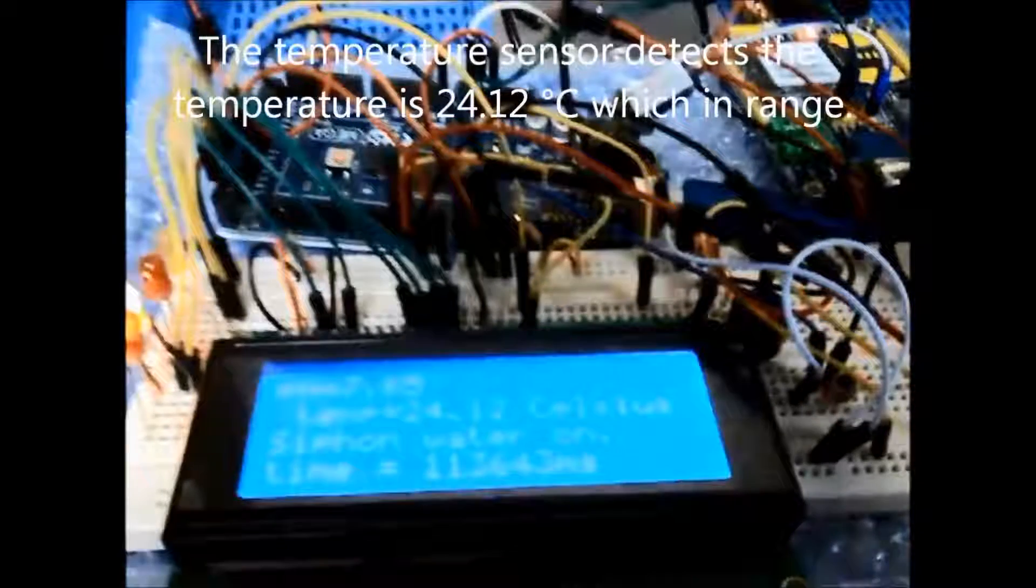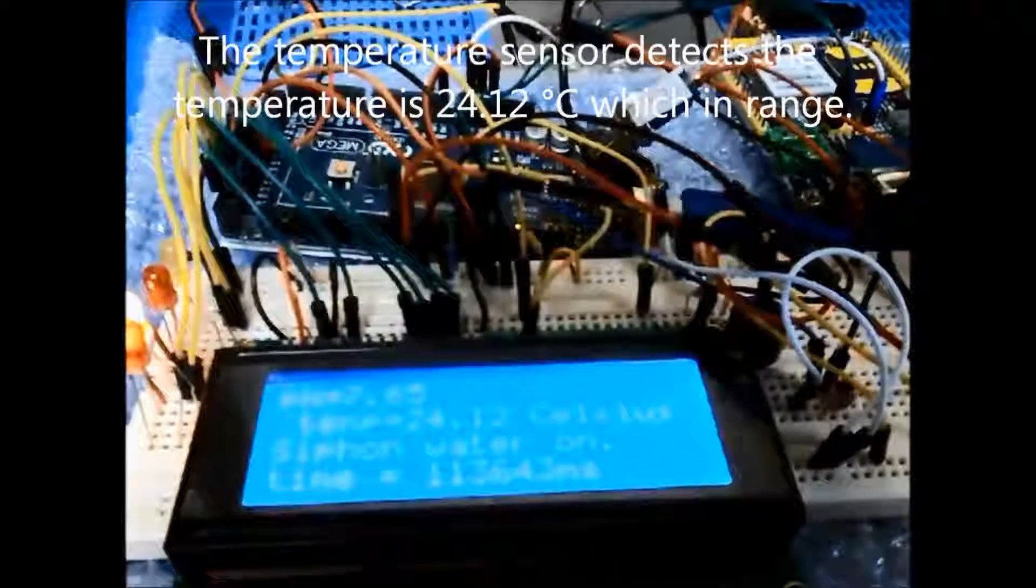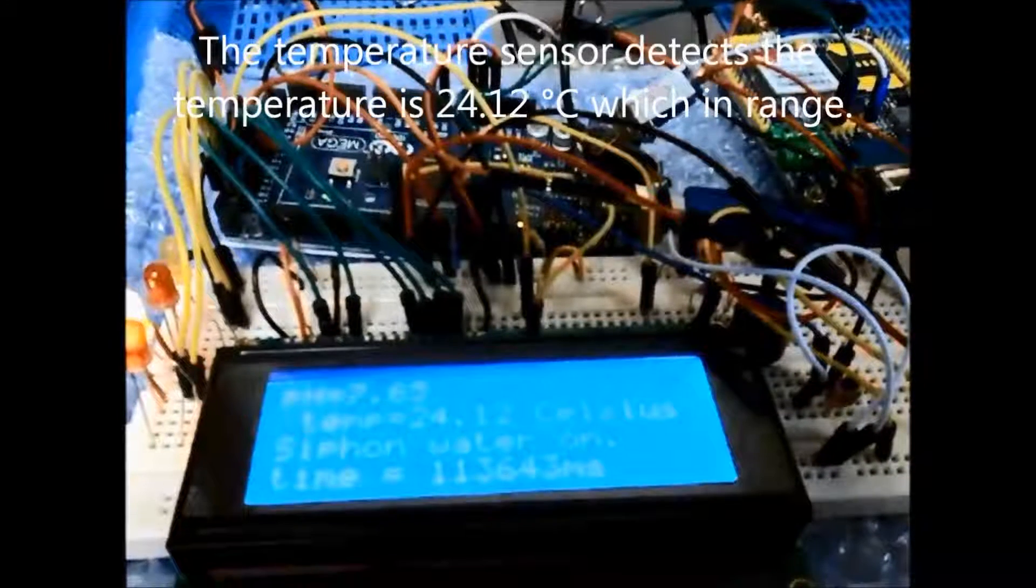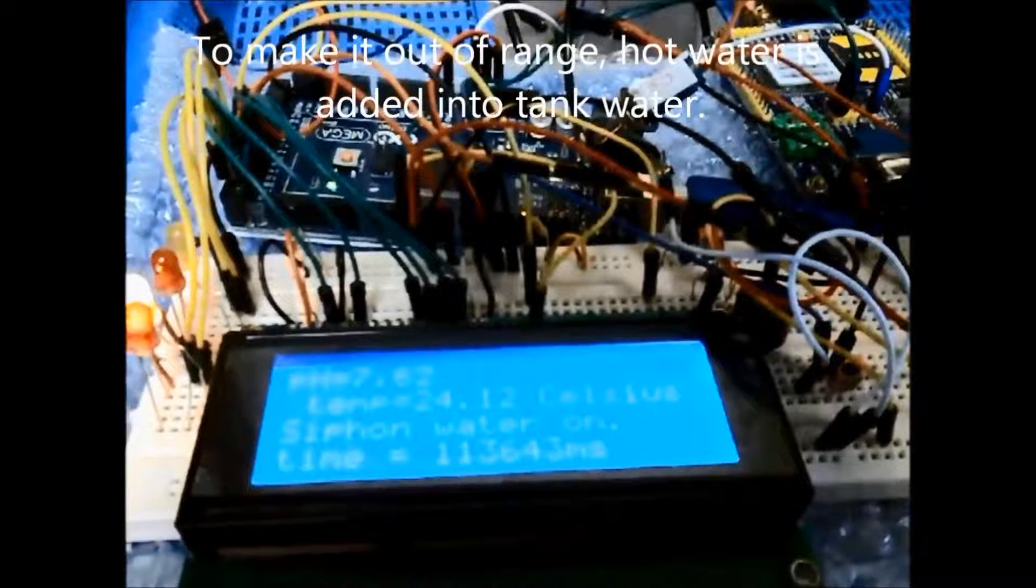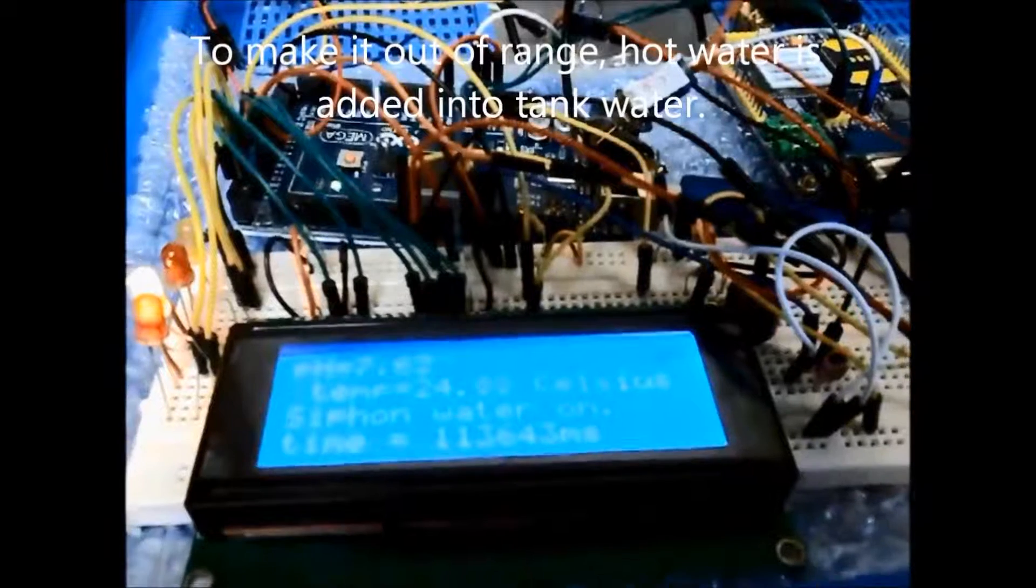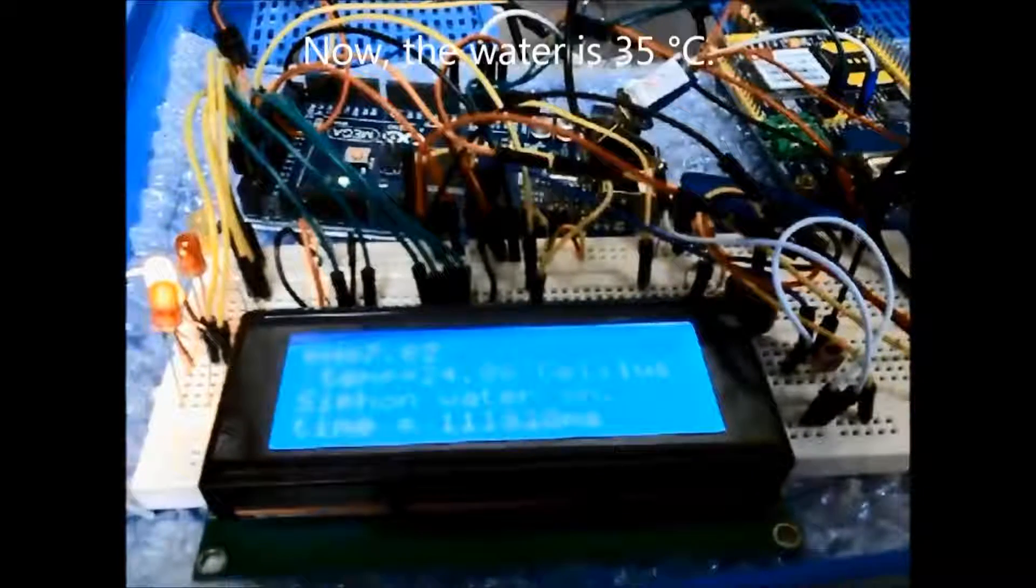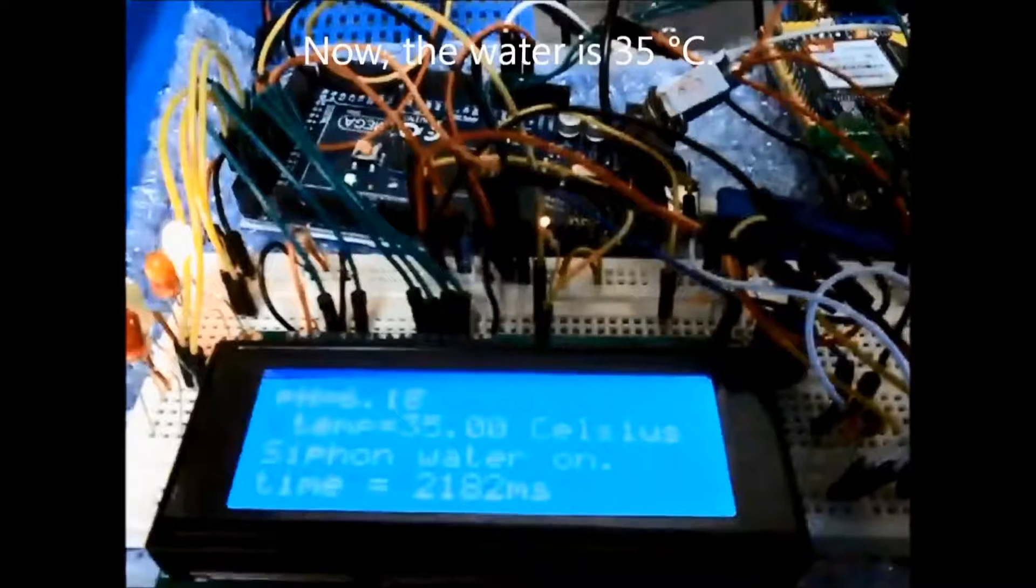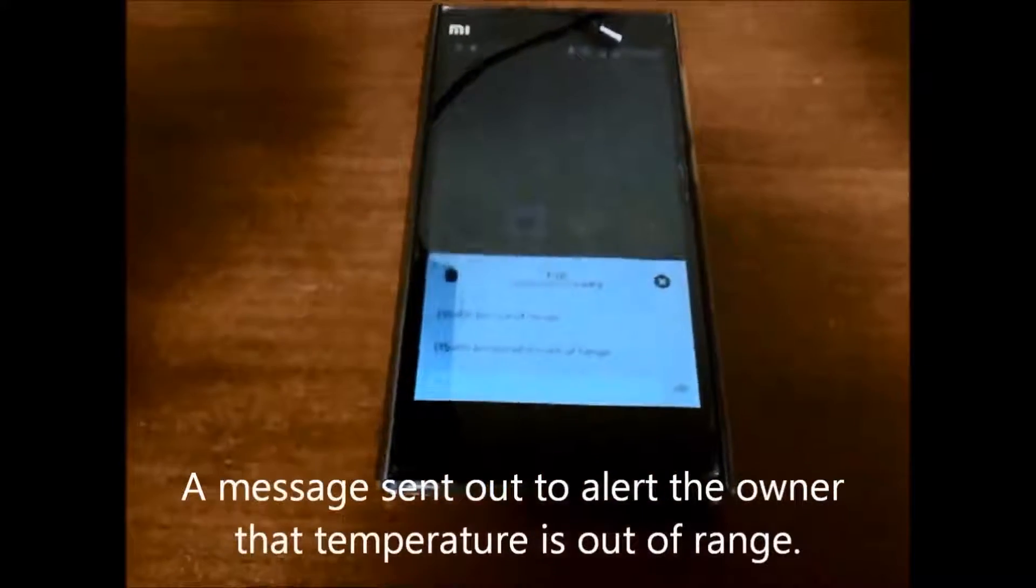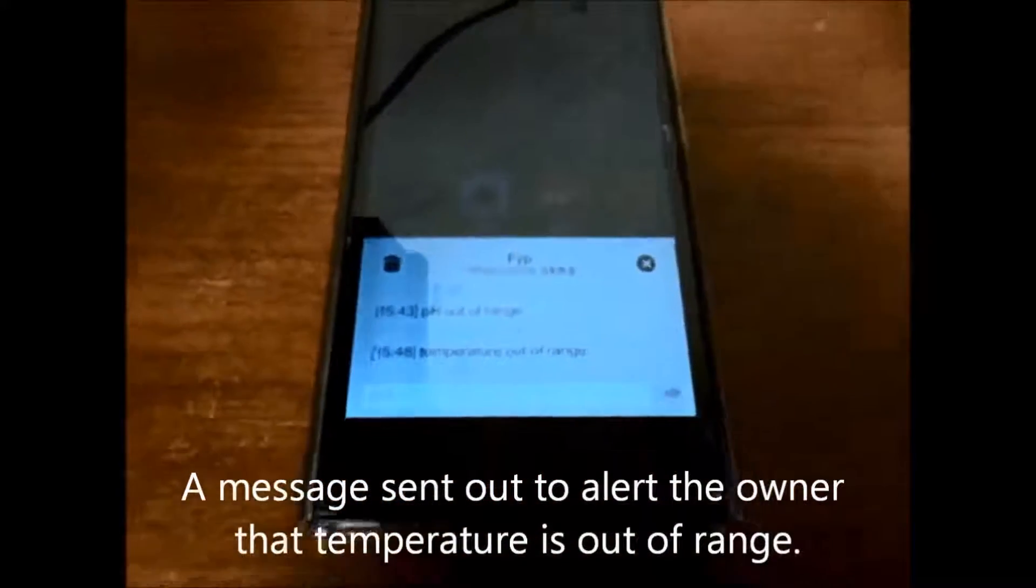The temperature sensor detects the temperature is 24.12 degrees Celsius, which is in range. To make it out of range, hot water is added into the tank water. Now, the water is 35 degrees Celsius. A message is sent out to alert the owner that the temperature is out of range.